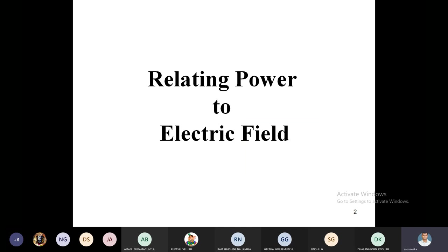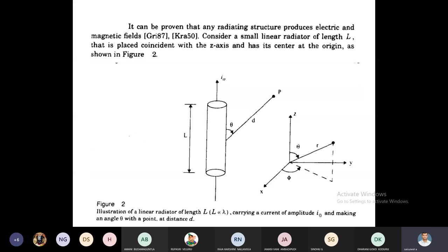I think that you know the relation between power, resistance, voltage, current. That is the power which is equal to V squared by R. Based upon this concept, now we are going for how the power is related to electric field.